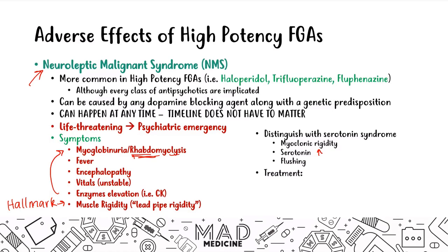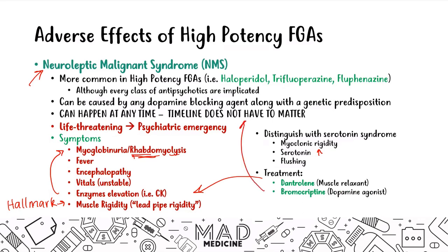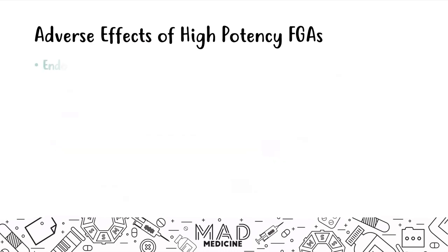Treatment of NMS involves three steps: dantrolene (a muscle relaxant for lead-pipe rigidity), bromocriptine (a dopamine agonist to counter the dopamine-blocking effect), and discontinuation of the causative agent. On Step 1, a vignette may describe a sedated patient found by a friend, with dark red urine (myoglobinuria) and very rigid muscles on exam — especially if the patient has schizophrenia and takes an antipsychotic, this should immediately point you to NMS.